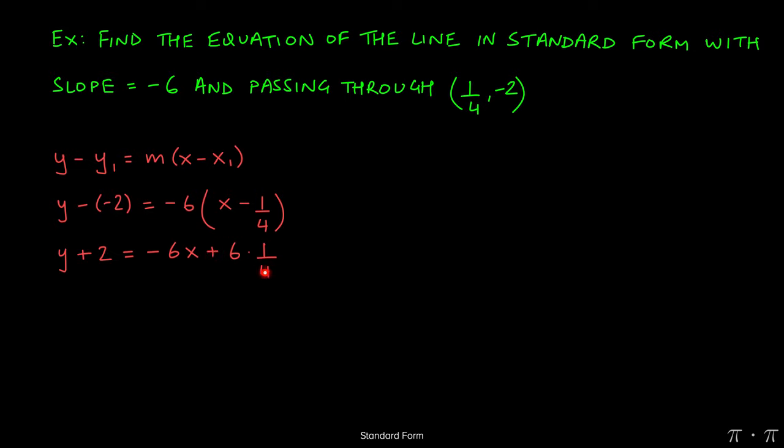Now we can simplify or reduce this fraction as 3 over 2. Both these numbers are divisible by 2, which is represented right here. So we get the equation y plus 2 equals negative 6x plus 3 halves.